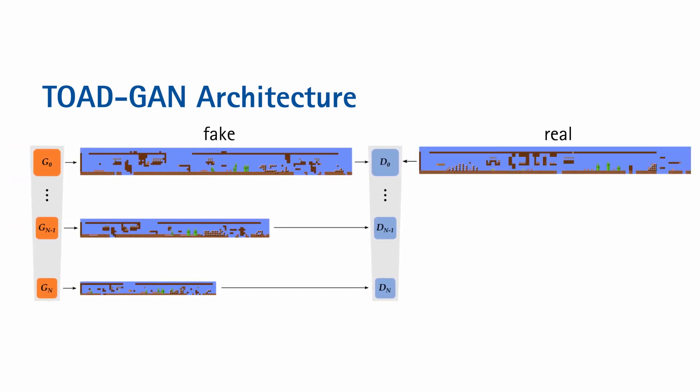For this to work, we need to scale down the original level first, which poses a unique problem. Using normal interpolation techniques, rare or important tokens disappear by being overwritten with more common tokens. This can be problematic as higher scales of the image do not get any information about them from the lower scales and have a hard time generating them.